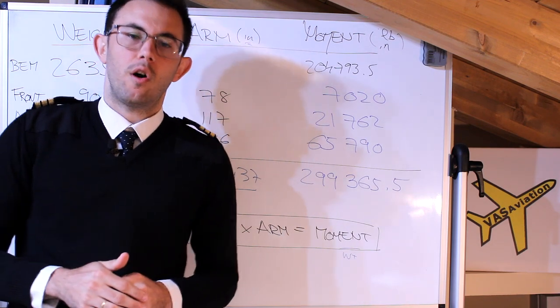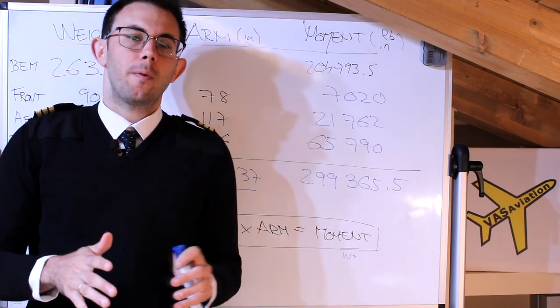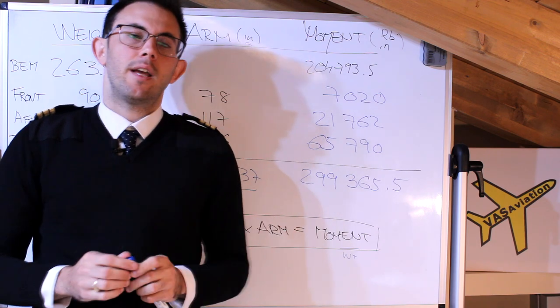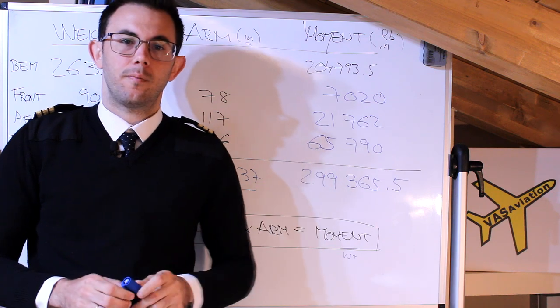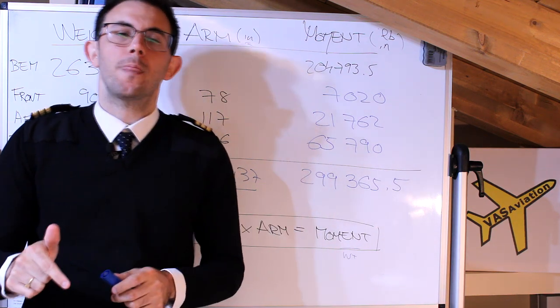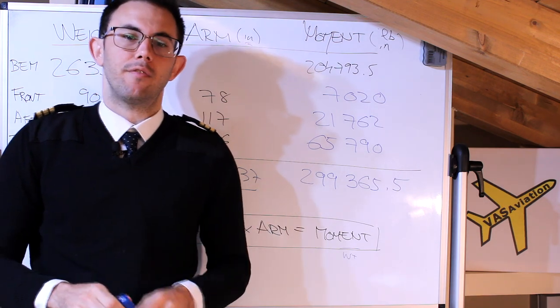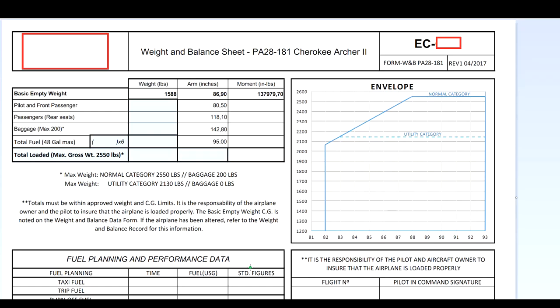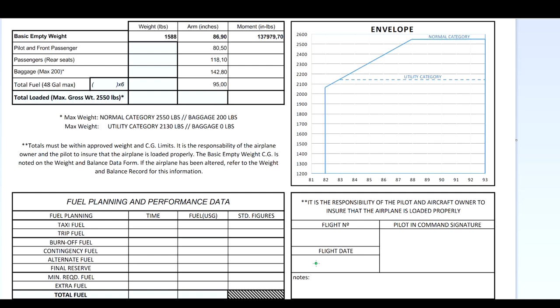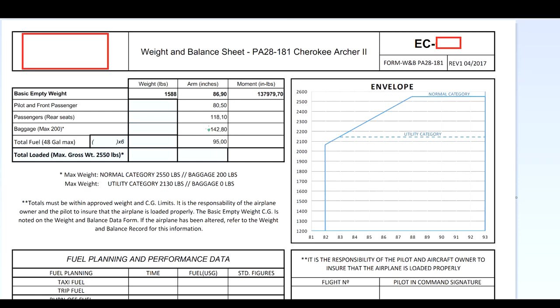Now I want to show you one example of a real load sheet — actually a couple of them. One is from a Piper Cherokee and the other is from a corporate jet, the Cessna Citation. Let's get into the paperwork and see how we do it in real life and how we calculate the center of gravity position. Here you can see a very basic and simple weight and balance sheet for a PA-28 Turbo Archer II aircraft, with different tables and a diagram for the envelope on the right side.